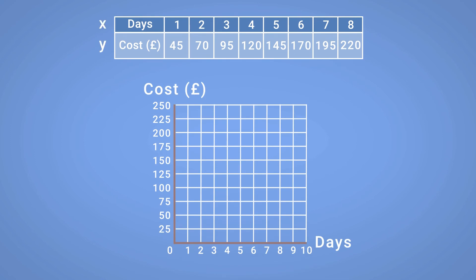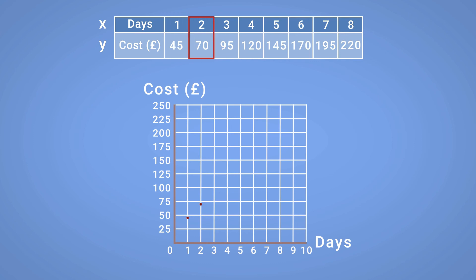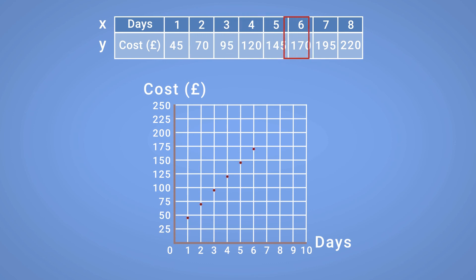With our table complete, we can plot the values on our grid, and what we respectively see as days and cost now give us our X and Y coordinates — for example, 1 and 45, 2 and 70, 3 and 95, and so on.